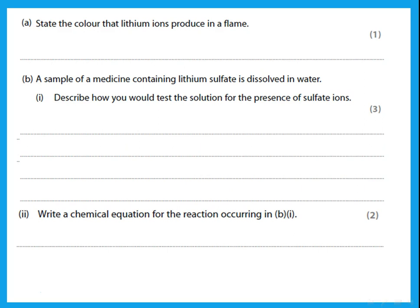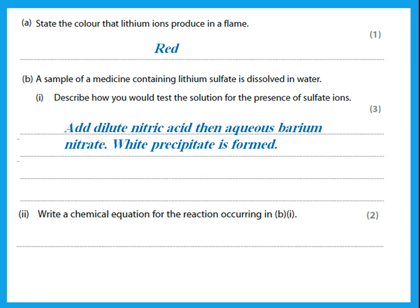State the color that lithium ions produce in a flame test. The color for lithium ions is red. For a sample of medicine containing lithium sulfate dissolved in water, the test for sulfate is: add dilute nitric acid, then aqueous barium nitrate — you get a white precipitate.